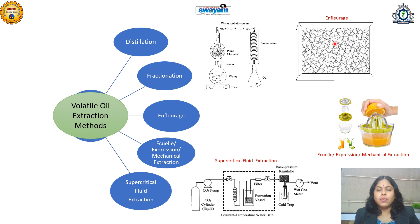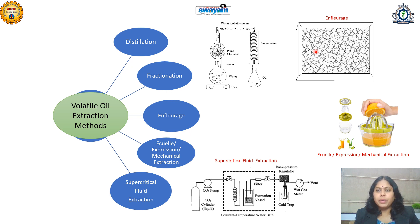The next method is enfleurage, which is useful for delicate aromas from flowers such as roses, jasmine, and tuberose. Cold or hot fatty material is poured onto a tray, and a layer of flower petals or inflorescences is spread over it. Every 24 hours the flower layer needs to be replaced, continuing until the fatty material is fully saturated with the essential oil. The oil is then separated by heating and distillation from the fatty material. This method is preferred for delicate aromatic essential oils.